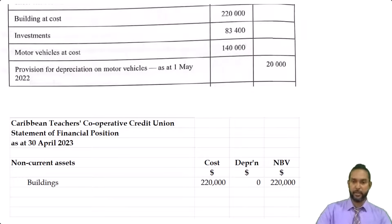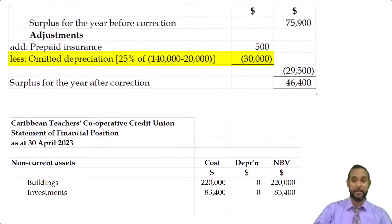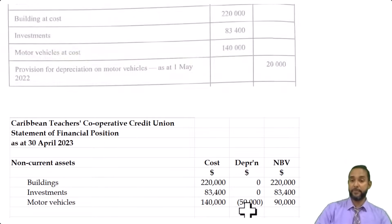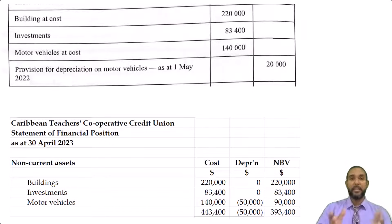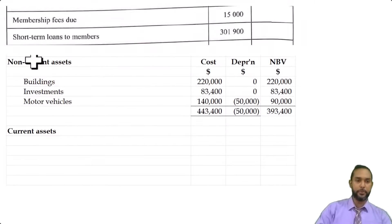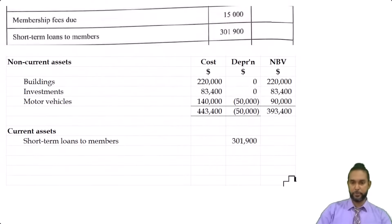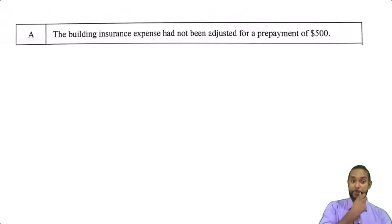The motor vehicles was 140. The existing depreciation before was 20, but we depreciated by 30 this year, so you have to add that 20 and that 30 to get 50. And 140 minus 50 is 90. If you need a refresh on how to do statements of financial position, I'm going to put a card up there and the link in the description below. Next, we're dealing with the current assets: membership fees due, short-term loans to members, and bank balance. Oh, and I forgot the 500 prepaid expenses — the prepaid 500.